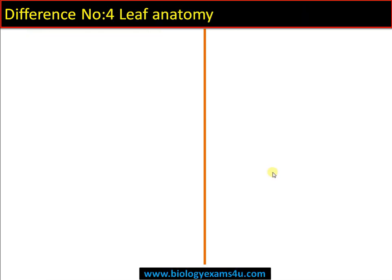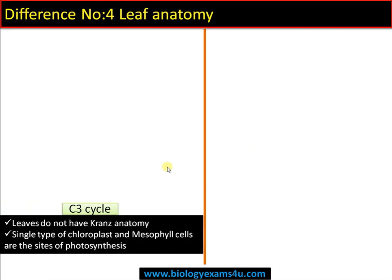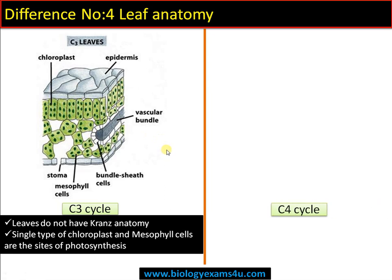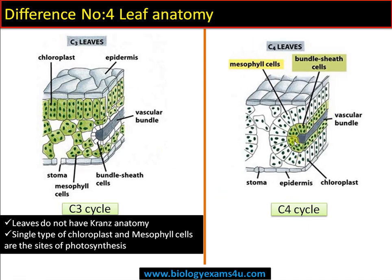Difference number four — leaf anatomy. There is no Kranz anatomy in the leaves of C3 plants. They have a single type of chloroplast; the vascular bundle is surrounded by bundle sheath cells without chloroplast, and the site of photosynthesis is the mesophyll cell. In C4 plants, there is a specific anatomy designed for the C4 cycle: vasculature is surrounded by bundle sheath cells with chloroplast, which is further surrounded by mesophyll cells with chloroplast. Mesophyll cells are the site of initial CO2 fixation and light reaction.